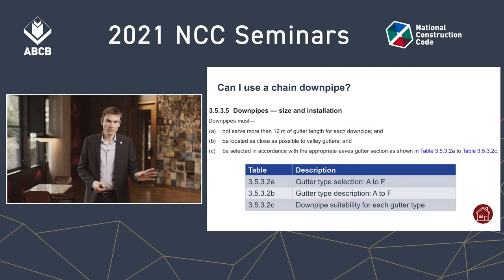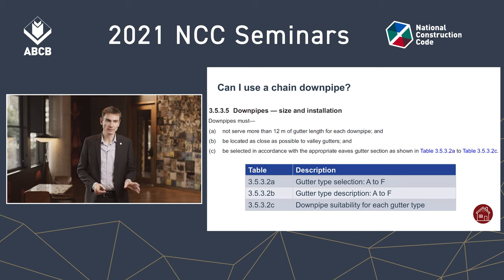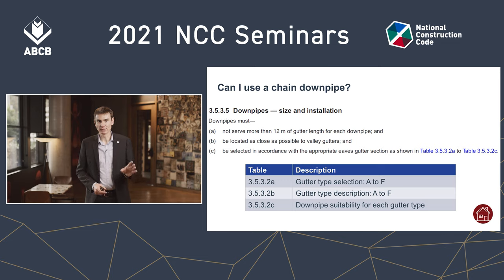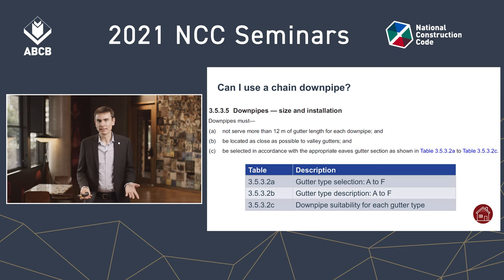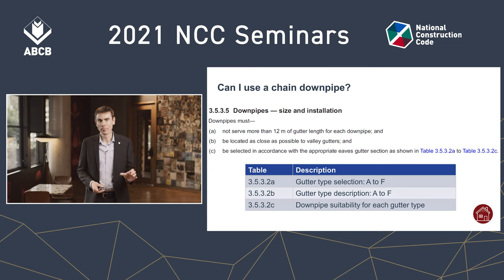In the Volume Two ACP the relevant provision is clause 3535. Sub-clause C has the details about the downpipe itself and sends you to Tables 3532 A through to C. In figuring out what downpipe you can have under the deemed-to-satisfy provisions, you have to start at the roof.